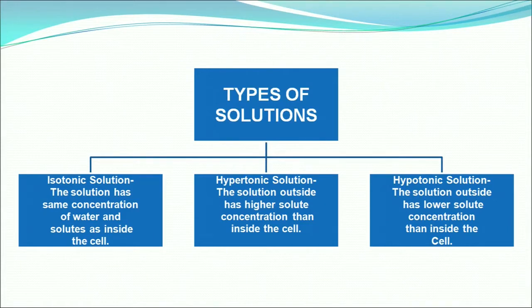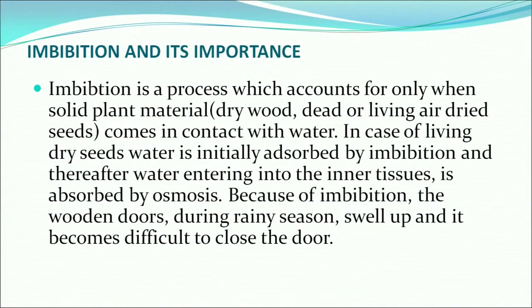What is imbibition and what is its importance? Imbibition is a process that occurs when solid plant material like dry wood or dead or living air-dried seeds comes in contact with water. In the case of living dry seeds, water is initially adsorbed by imbibition, and thereafter water entering the inner tissue is absorbed by osmosis. Because of imbibition, wooden doors during the rainy season swell up and become difficult to close.